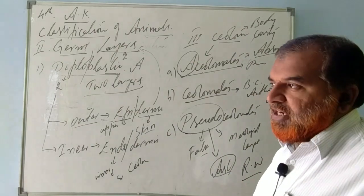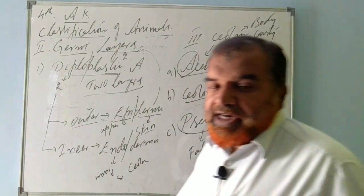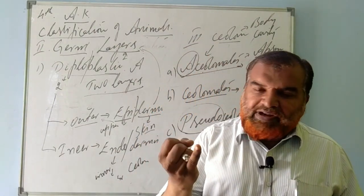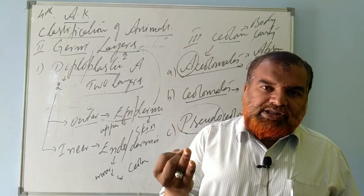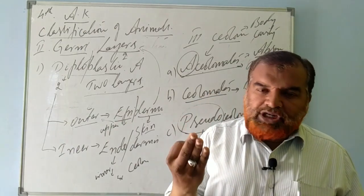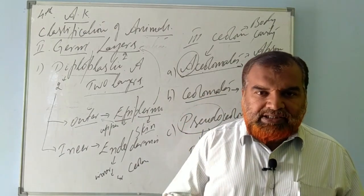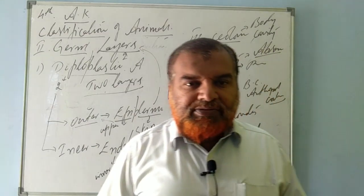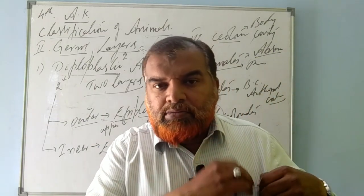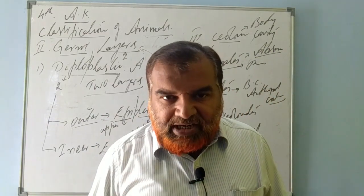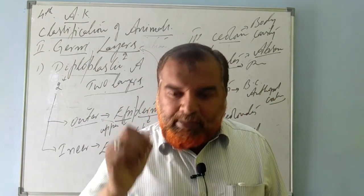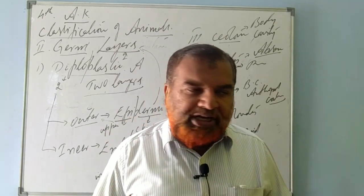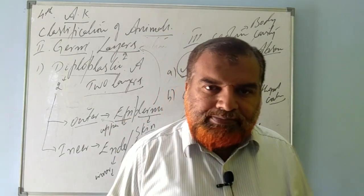More primitive animals are acoelomates. Today we have covered three categories: level of organization, germ layers, and coelom. In the next class, we will talk about symmetry. Watch this class repeatedly, make your own notes, keep studying. God bless you, good luck, take care.